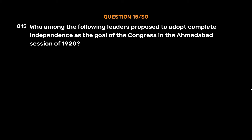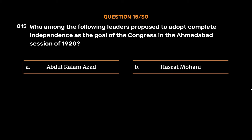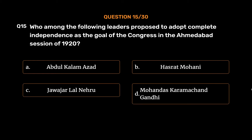Question No. 15. Who among the following leaders proposed to adopt complete independence as the goal of the Congress in the Ahmedabad session of 1920? Option A: Abdul Kalam Azad. Option B: Hasrat Mohani. Option C: Jawaharlal Nehru. Option D: Mohandas Karamchand Gandhi. The correct answer is Option B: Hasrat Mohani.